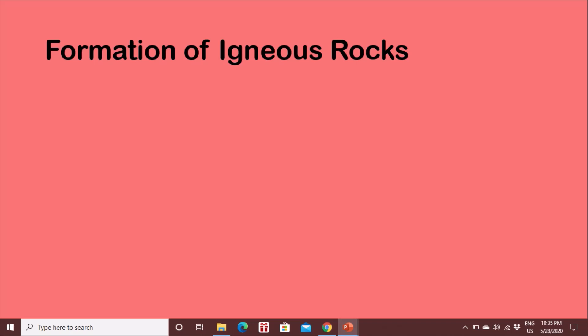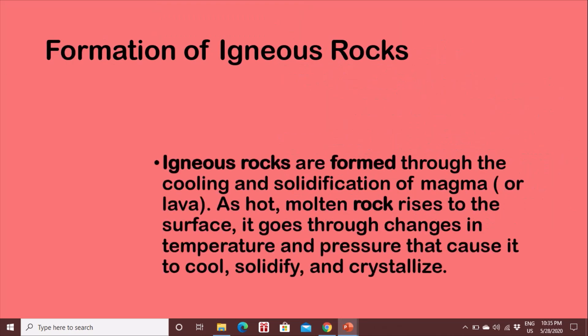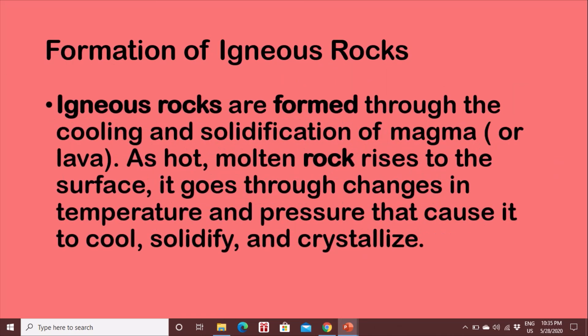Formation of igneous rock. Igneous rocks are formed through cooling and solidification of magma or lava. As hot molten rocks rise to the surface, they go through changes in temperature and pressure that cause them to cool, solidify and crystallize.